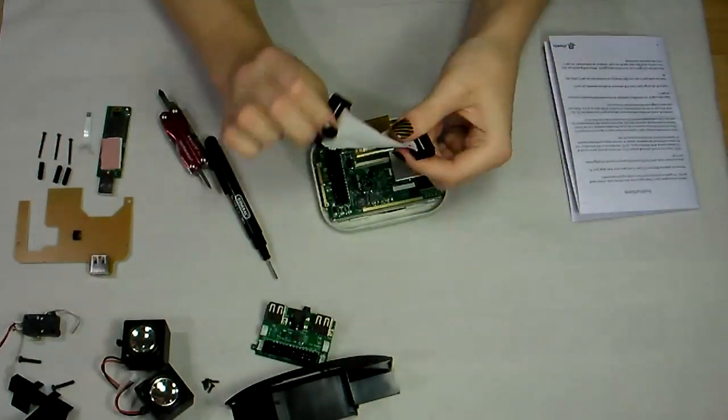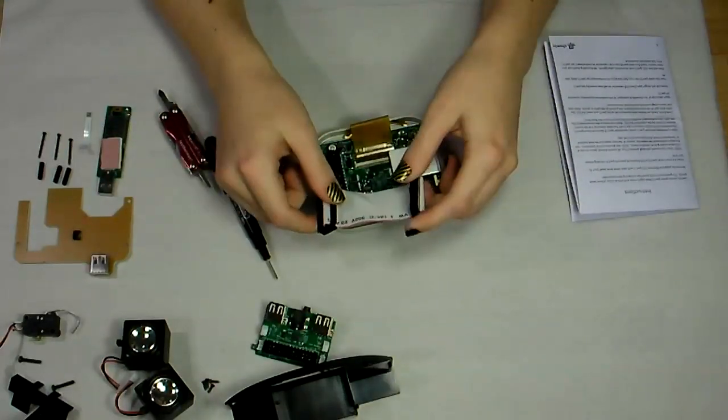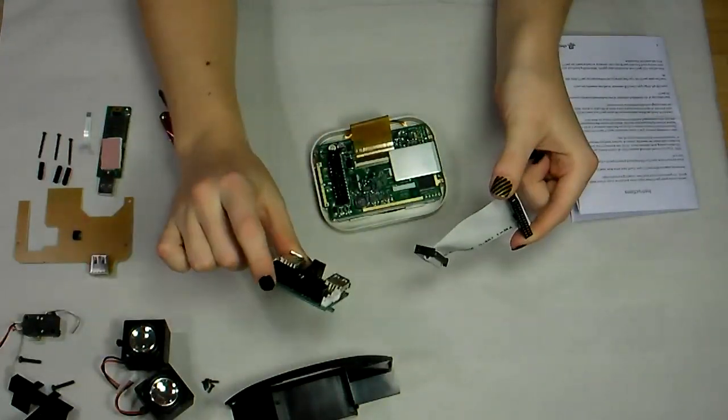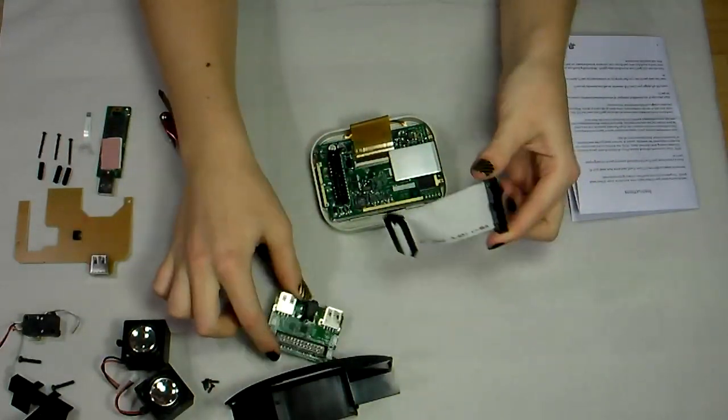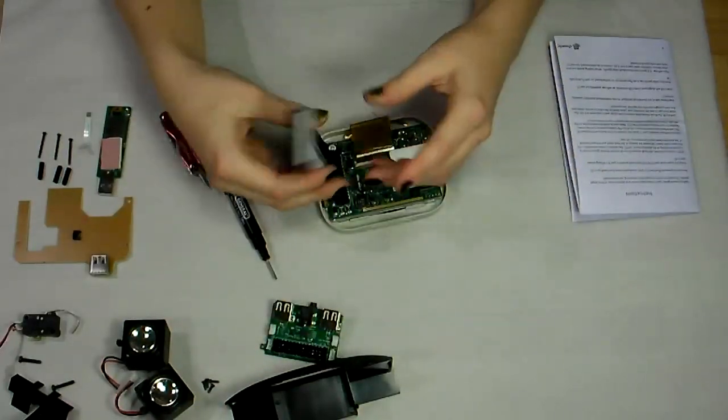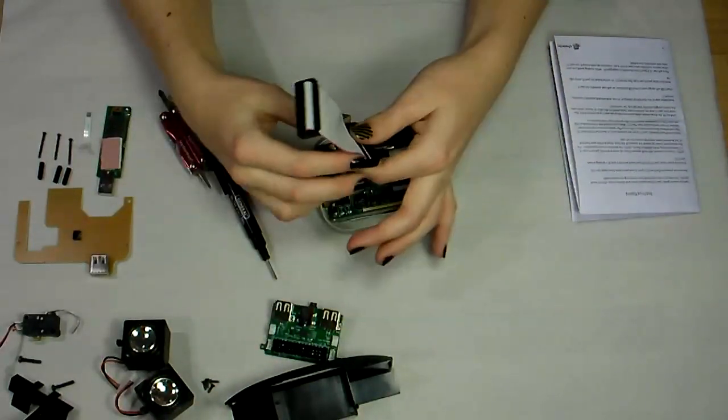Next, attach this ribbon cable. It's called the chumbilical cord. It's the connector between the USB power sound board and the motherboard, and you can connect it either way.